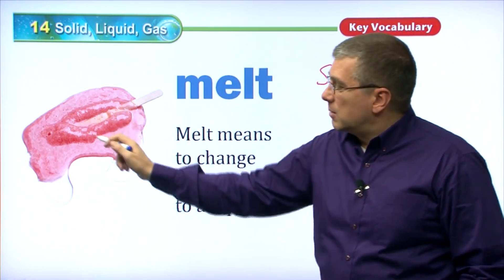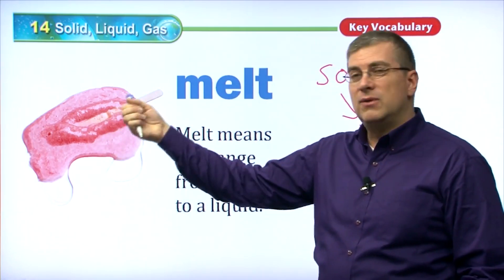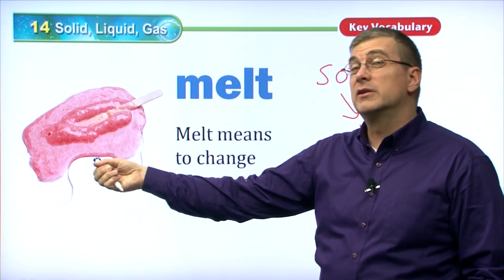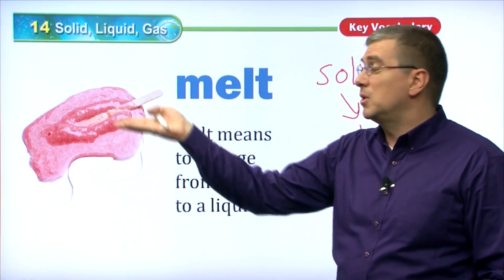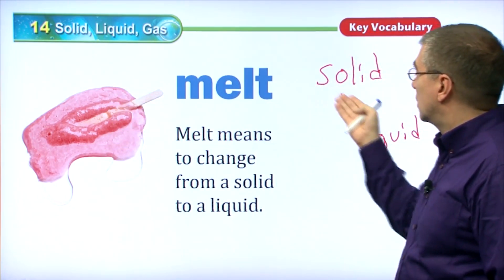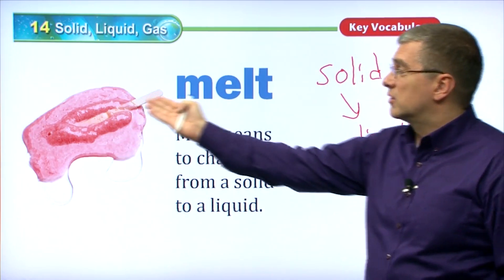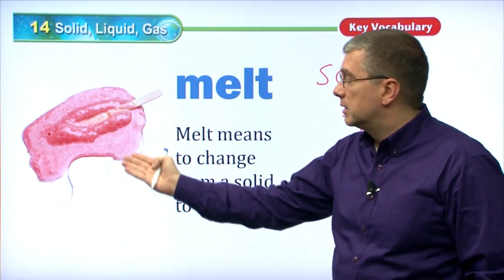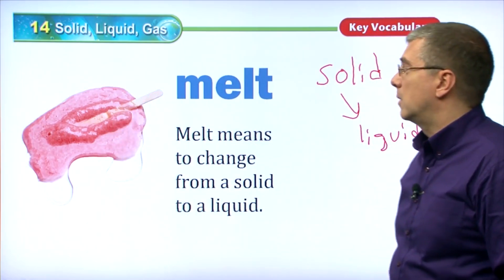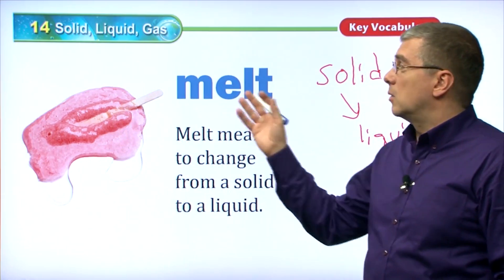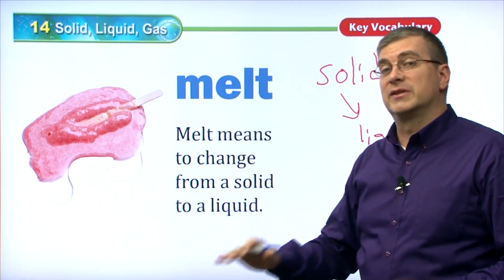An ice cream bar has to be cold. If you leave the ice cream bar out on a hot sunny day, you're raising the temperature and it turns into a liquid — changes from a solid to a liquid. So freeze and melt are opposites.